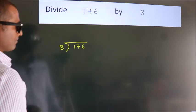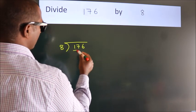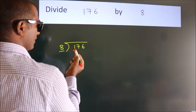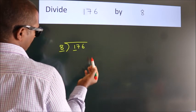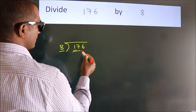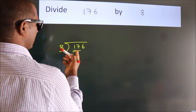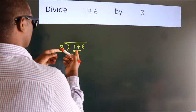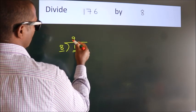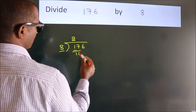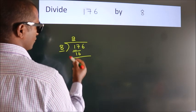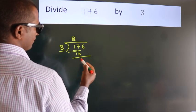Next, here we have 1, here 8. 1 is smaller than 8, so we should take two numbers: 17. A number close to 17 in the 8 table is 8 times 2 equals 16. Now we should subtract, and we get 1.